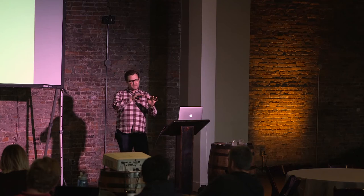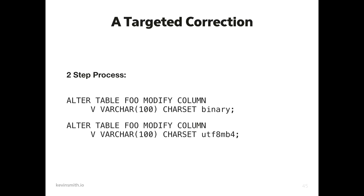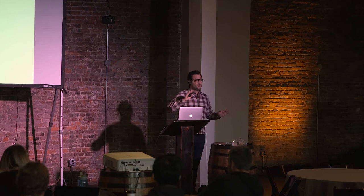There are a couple of approaches. For a targeted correction on just a few fields: the two-step approach is to first tell the database the field contains binary content — this breaks the connection between the old encoding and the new one, so the database won't touch the ones and zeros. Then right after, tell the database that field contains UTF-8 MB4 data. You've just updated the label — it now correctly understands the data in that field. However, for us, doing this for every field across a thousand databases was going to take weeks of non-stop running.